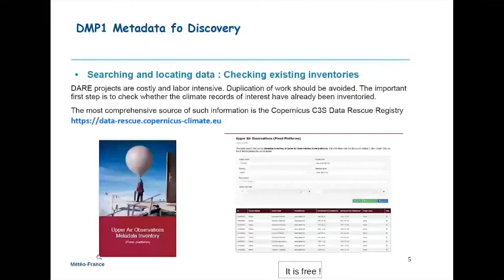Now I will illustrate how we are organized for this action of early data rescue, and how data management principles are at the heart of our work. I will show you an example of the data management principles. The first one is metadata for discovery. Climate data rescue projects are costly and labor intensive. It takes a lot of time to locate data, locate records, and to find metadata. So duplication of work should be avoided. The important first step is to check whether the climate records of interest have already been inventorized — so catalogues are very important.